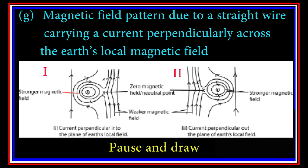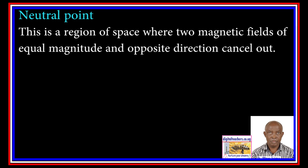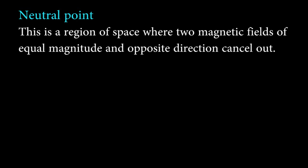G: Magnetic field pattern due to a straight wire carrying a current perpendicular to the earth's magnetic field. The magnetic field developed around a wire carrying current perpendicular into the earth's local field is shown in Diagram 1, while Diagram 2 shows the magnetic field developed by a wire carrying current out of the plane of the earth's local field. A neutral point is a region of space where two magnetic fields of equal magnitude and opposite direction cancel out.